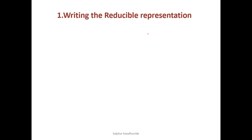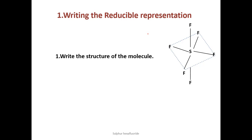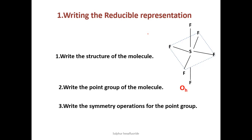First, we write the reducible representation. We start with the structure of sulfur hexafluoride, which is octahedral in shape. Sulfur is present at the center of the octahedron, and the six fluorine atoms occupy the six corners of the octahedron. The point group of the molecule is Oh. The symmetry operations for the Oh point group are E, C₃, C₂, C₄, C₂ (= C₄²), I, S₄, S₆, σH, and σD.